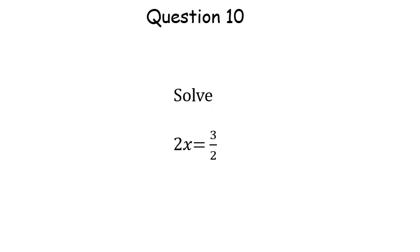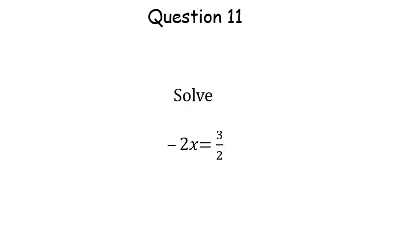Question 10. Question 11. Solving minus 2x equals 3 over 2, we get x equals minus 3 over 4.